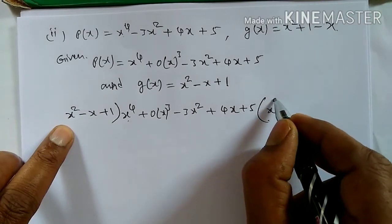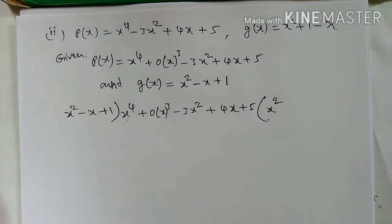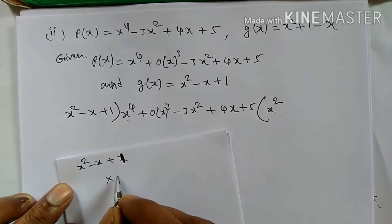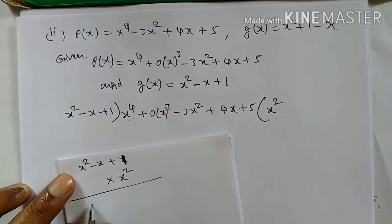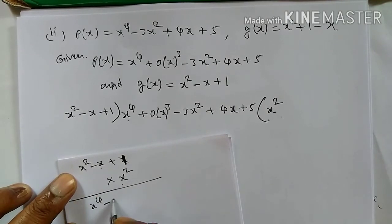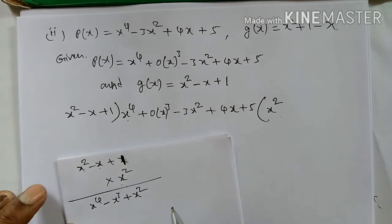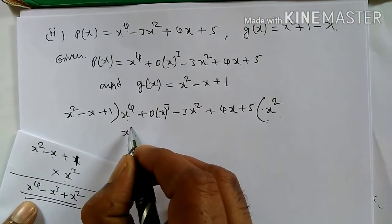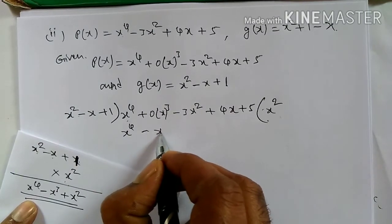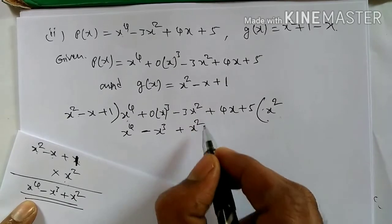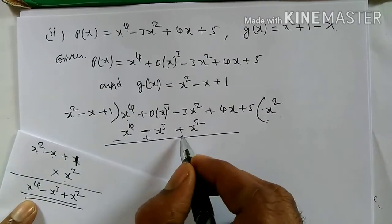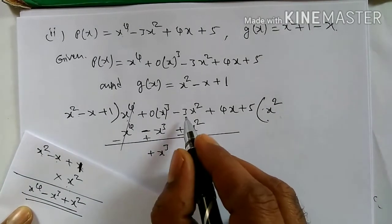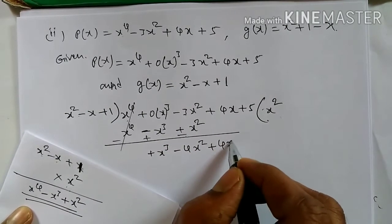X square and X square multiplied gives X power 4. So in the rough multiplication, X square minus X plus 1 multiplied with X square gives: X square into X square is X power 4, minus X into X square is X cube, plus 1 into X square is X square. So we get X power 4 minus X cube plus X square. Now subtract: these cancel, and we get X cube minus 4X square plus 4X plus 5.